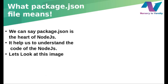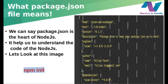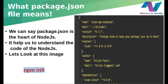So what does the package.json file mean? The package.json file can be considered the heart of Node.js, because it helps us understand the complete code structure of a Node.js project. Let's have a look at a sample image — this is a screenshot of a package.json file. It consists of fields like name, main, and version. In the dependencies section we will have the modules that we are going to use. You can install and initialize this package.json in your application with the help of 'npm init'.